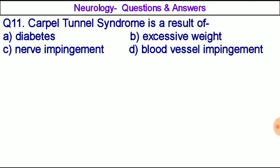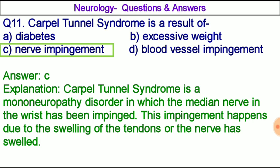Question number eleven: Carpal tunnel syndrome is a result of — option A: diabetes, option B: excessive weight, option C: nerve impingement, option D: blood vessel impingement. The correct answer is option C, nerve impingement. Carpal tunnel syndrome is a mononeuropathy disorder in which the median nerve in the wrist is impinged. This impingement happens due to swelling of the tendons around the nerve.